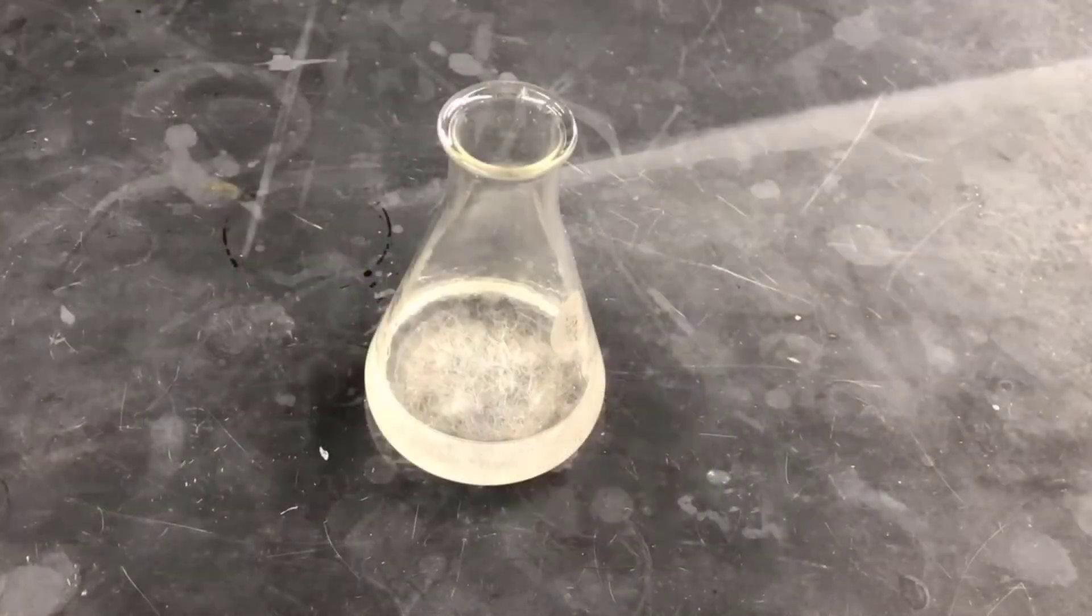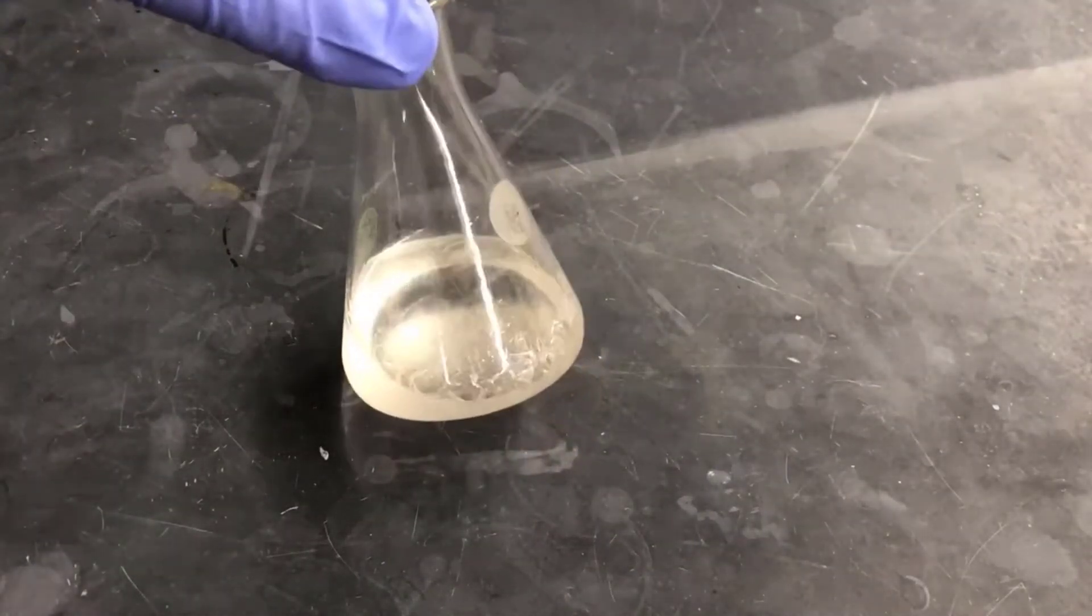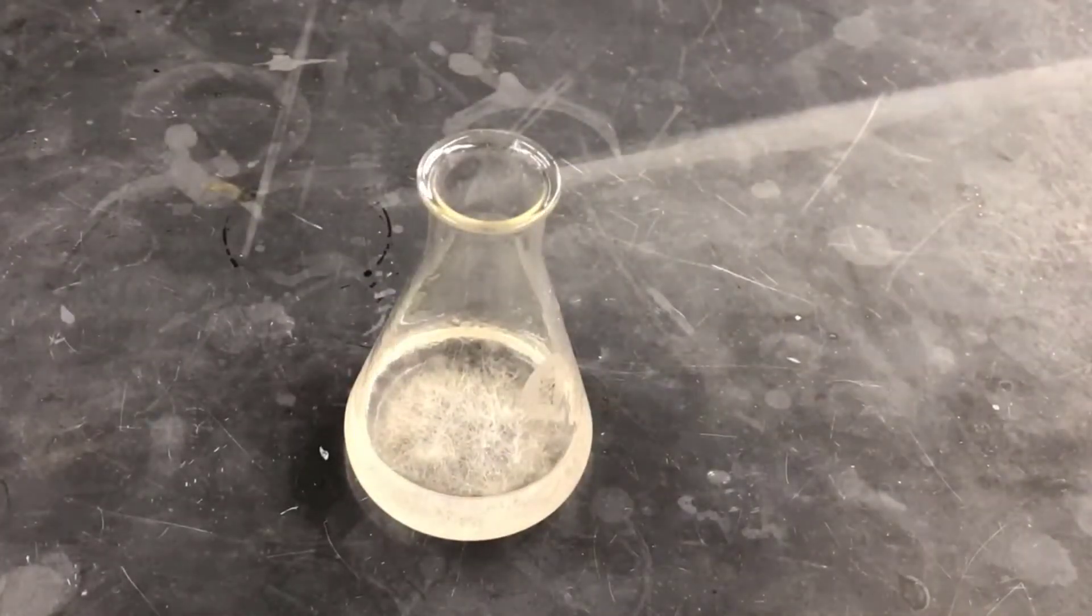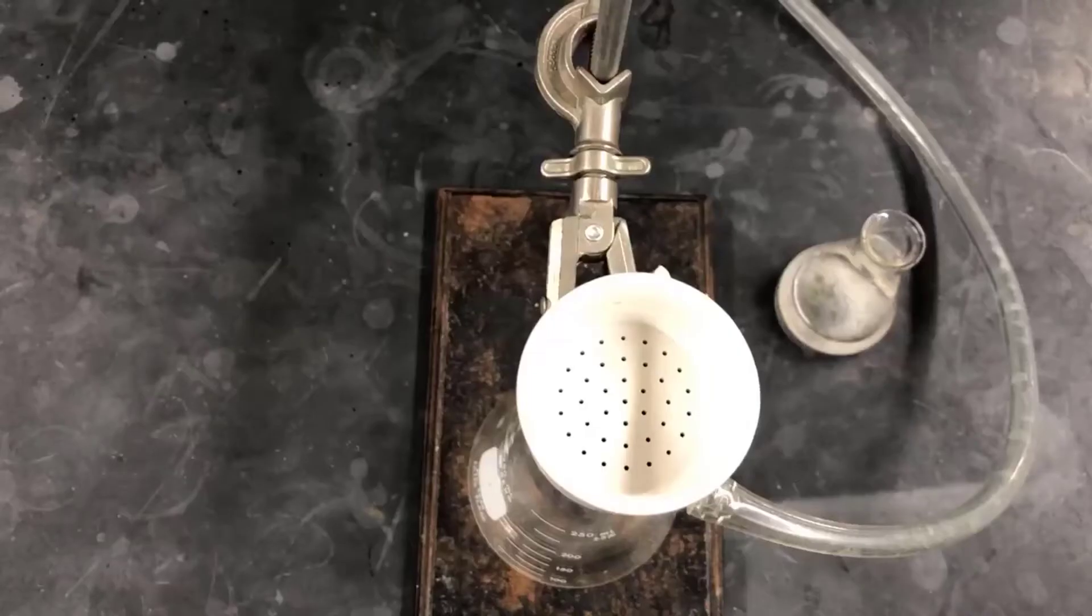Now the recrystallization is complete, and I have a flask full of colorless needles of the Diels Alder product, tetrahydrophthalic anhydride. I'll vacuum filter these crystals like I did before.